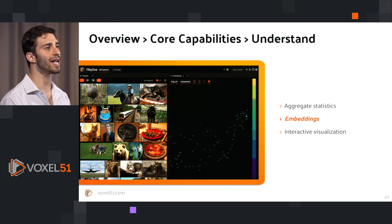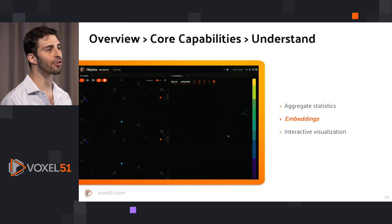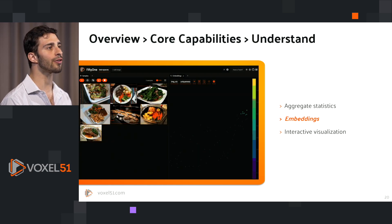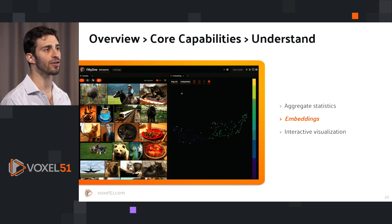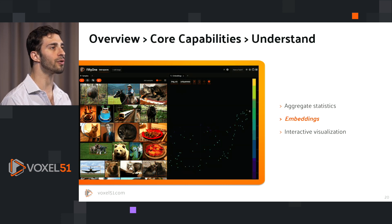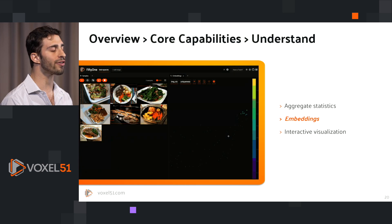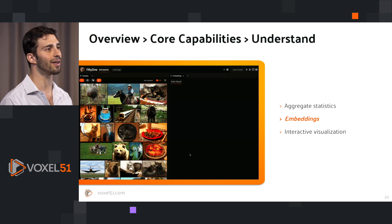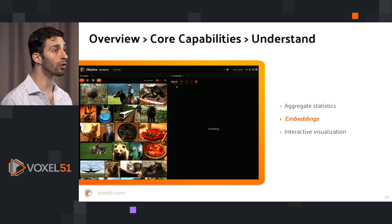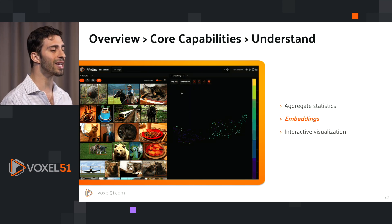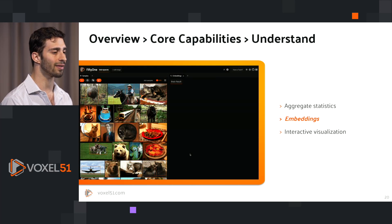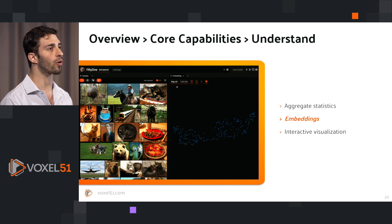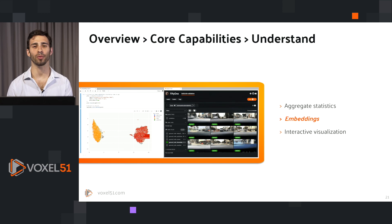In addition to aggregate statistics, FiftyOne also helps you understand your data via embeddings. Embeddings are kind of like the multi-tools of machine learning — they're used all over the place in computer vision and ML. In this example, we've computed embeddings for all the images in our dataset and then dimensionality-reduced them using UMAP. The result is a 2D representation of our data. We can color those embeddings by specific attributes, then lasso select a cluster and see the corresponding images — in this case, the cluster corresponds to plated food.